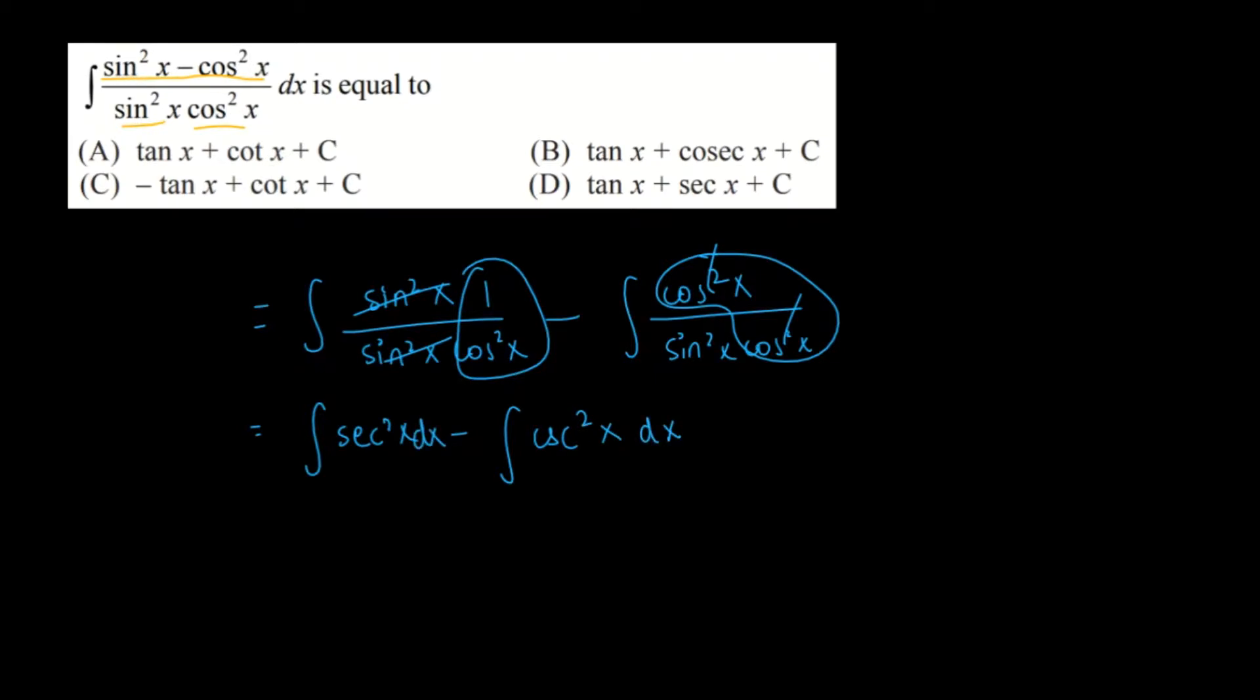Now this is very simple. Sec squared x anti-derivative is tan x, and the minus sign goes on. Then cosec squared x anti-derivative is negative cot x plus some constant C.